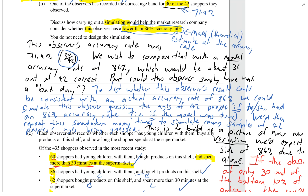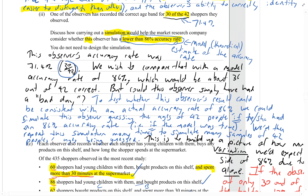The key point here is we're comparing an observed result — that is the 30 out of 42 — with a theory or model — that is the 86%. We're trying to see whether the observed result would be consistent with that model, or whether it's so bad that it's not consistent with the model. We know there is variation when processes like this are done — some days you do better than others. So we're trying to simulate that variation based on the model being true, and if the result doesn't fit within the expected variation either side of that model, then we can say this observer must be worse at guessing ages than 86%.